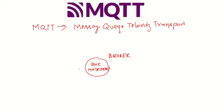We will see how this MQTT protocol works and understand its internal architecture. Using a simple analogy: we have a matrimony site called BHK Matrimony. This site is called a broker.